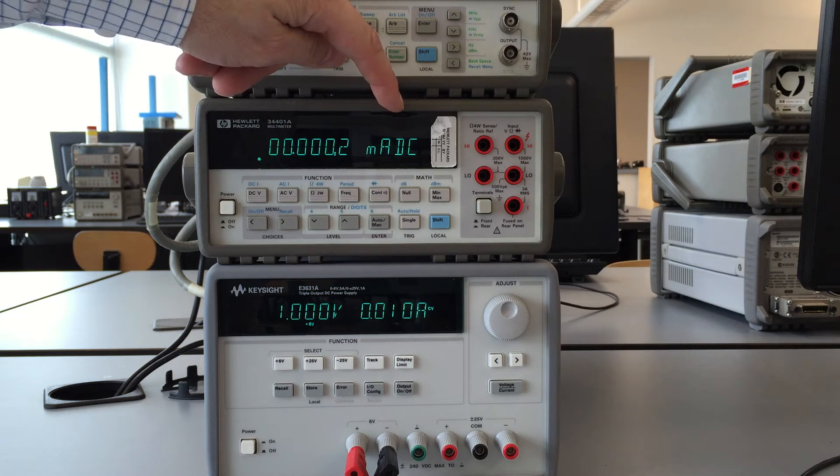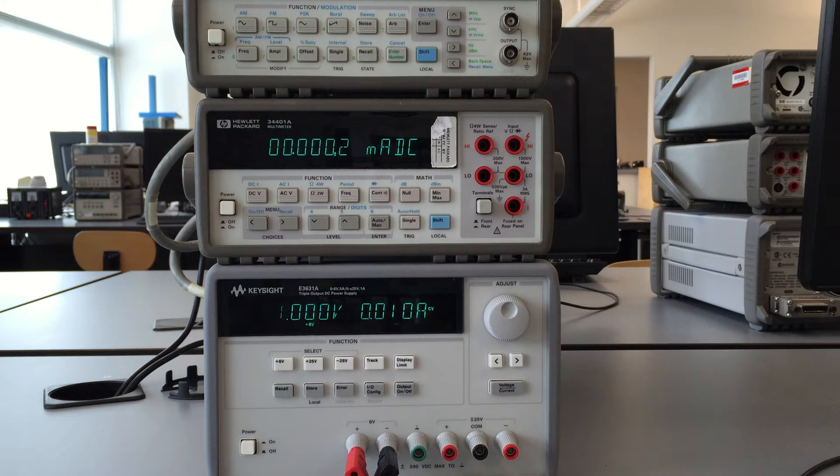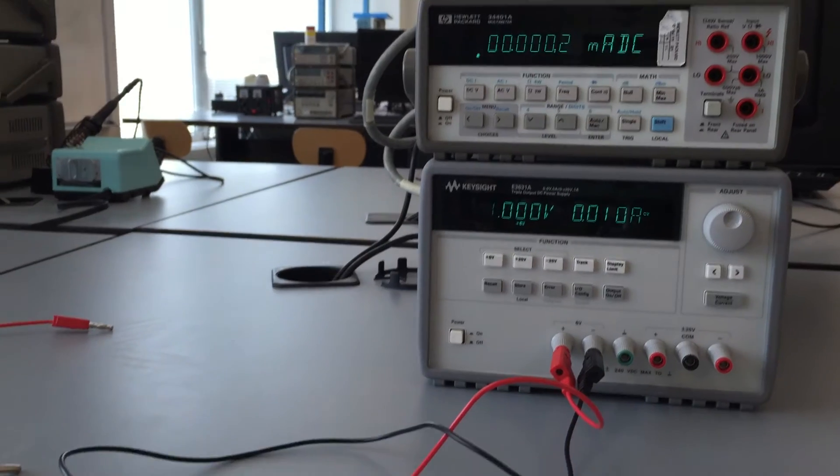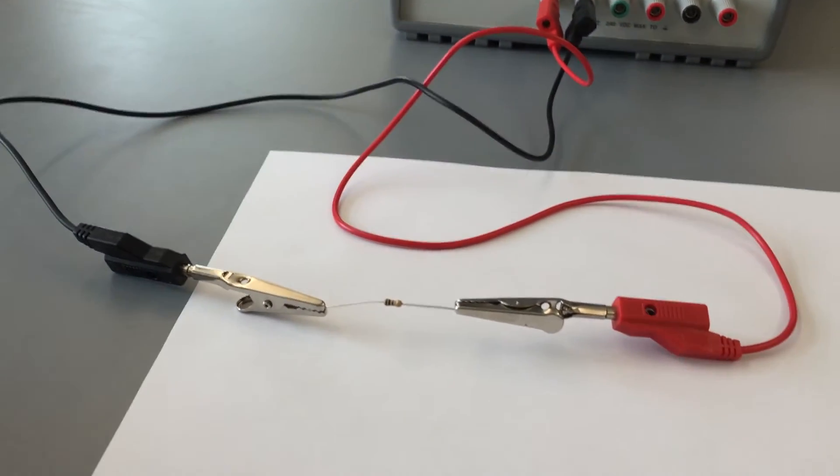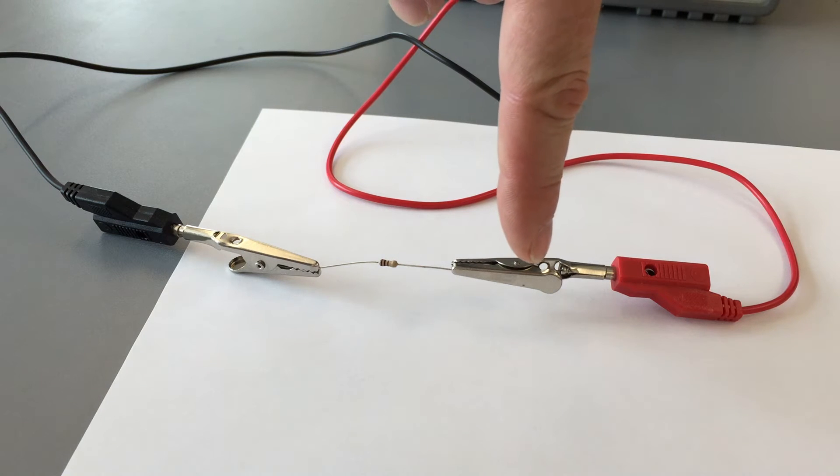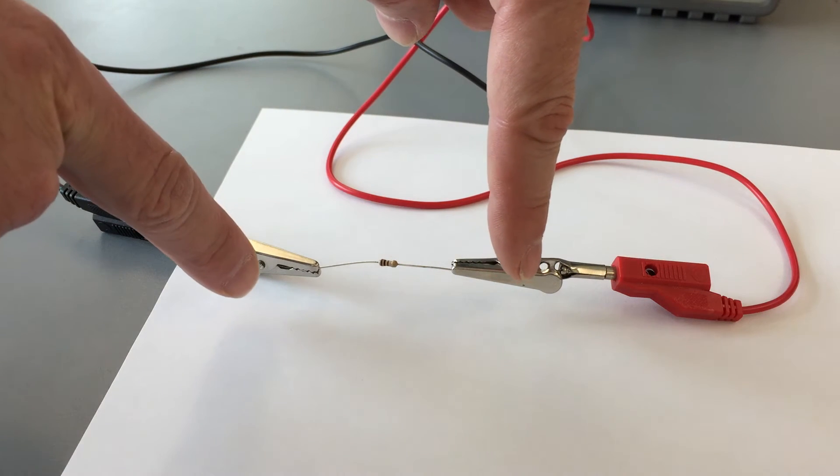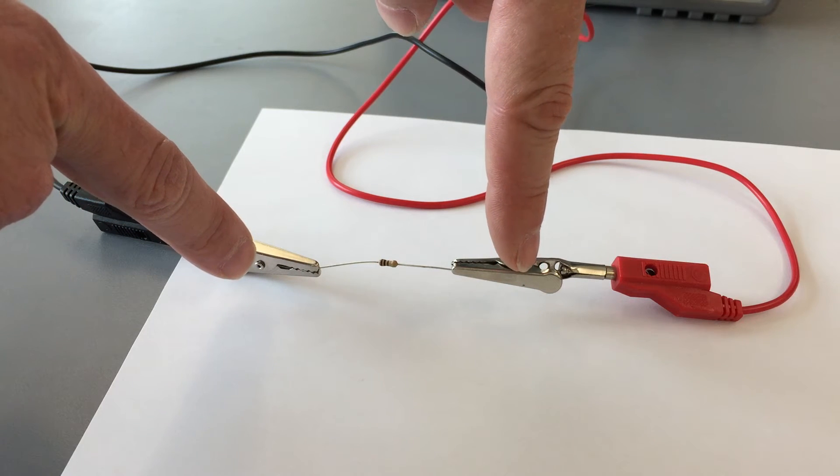In order to measure current through a circuit, you need to actually break into the circuit. It's different than measuring voltage. When you measure voltage, you measure voltage across something. Like if we want to measure the voltage across the resistor, pretending my fingers were probes, we'd connect one terminal of the voltmeter there and the other terminal right there and we'd be measuring the voltage.